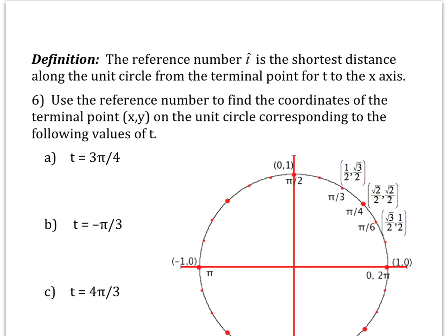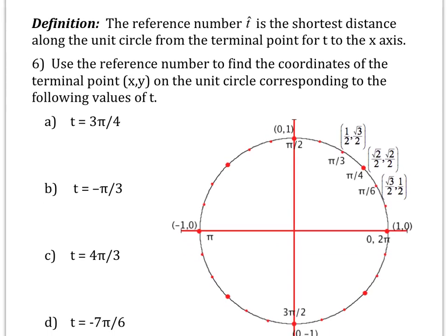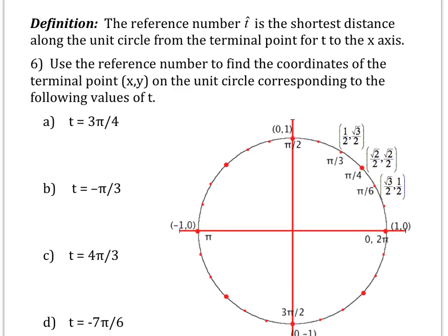The book also talks about the idea of a reference number. It's essentially the same as what we've been doing. The reference number is defined as the shortest distance between the point on the unit circle and the x-axis. For example, at t = 3π/4, the reference number is π/4. Since we're in the second quadrant, the coordinates are (−√2/2, √2/2).